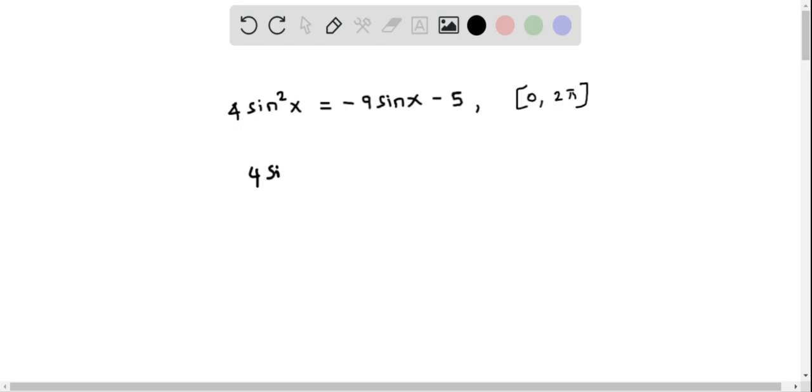So therefore it becomes 4sin²x plus 9sinx plus 5 equals 0. To make it look like a quadratic equation, I am going to replace sinx by u.